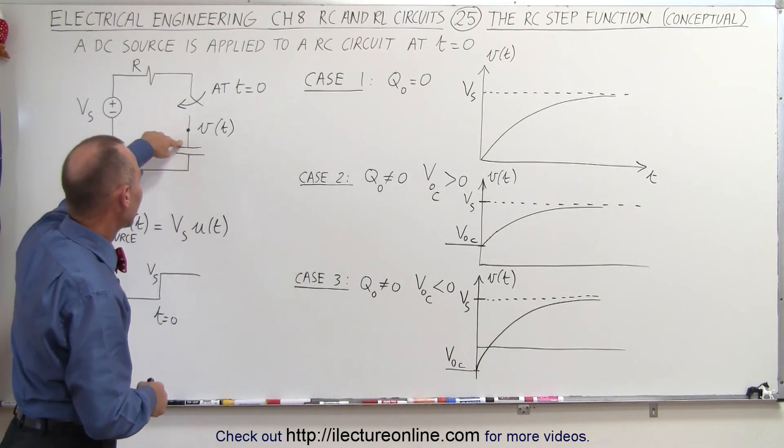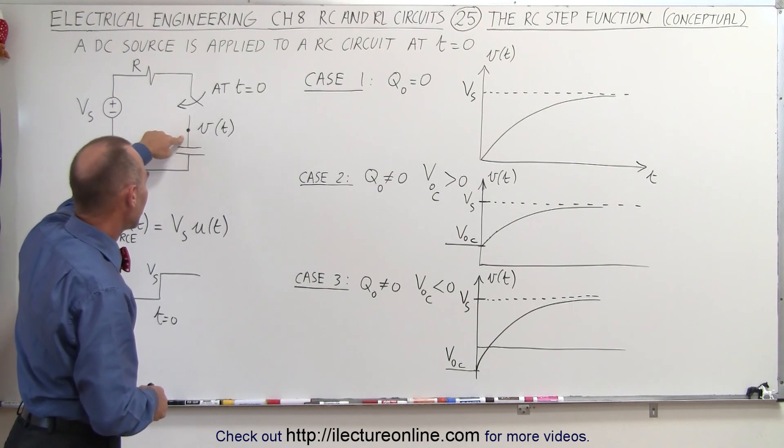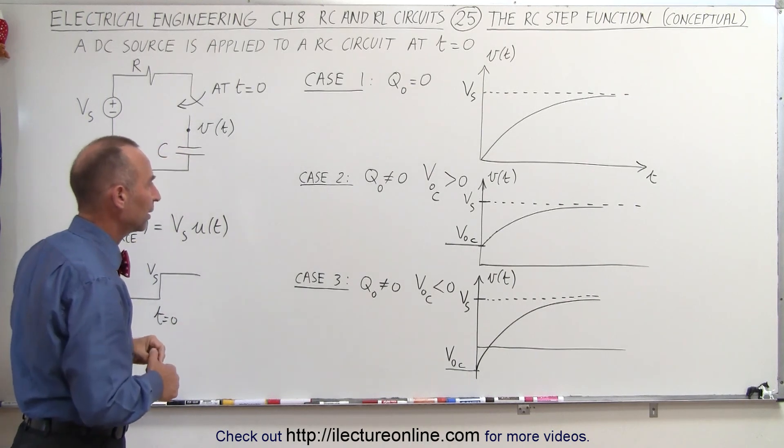If there's positive charge on this side of the capacitor, this voltage will be higher than this. If there's negative charge on the capacitor, then this side of the capacitor will have a smaller voltage than this side right here.